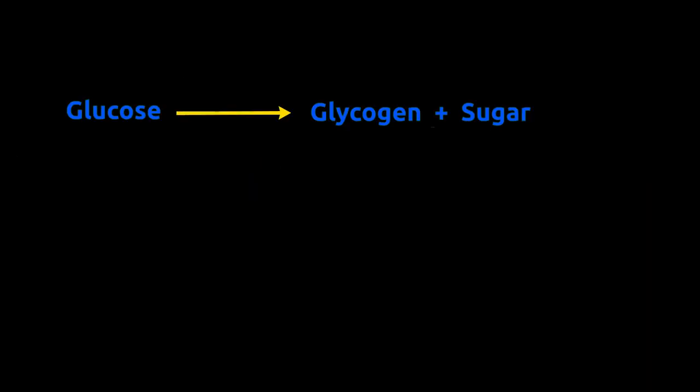For example, glucose converts to glycogen and sugars which get stored in cells. This can be used for energy in the future.